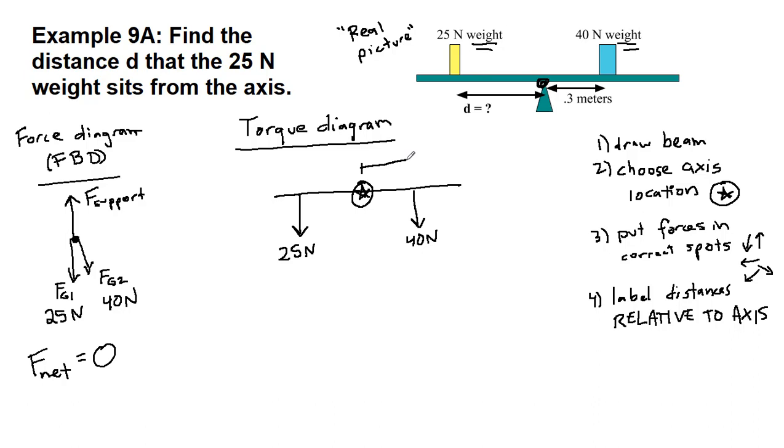So for each force that we put in, relative to the axis, we put in how far away it is. This one is 0.3 meters, and this one is our unknown distance d, but we can still label that.